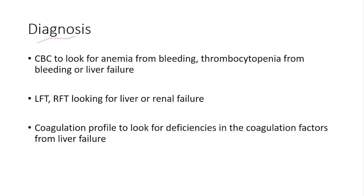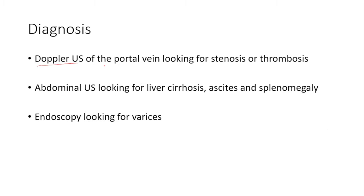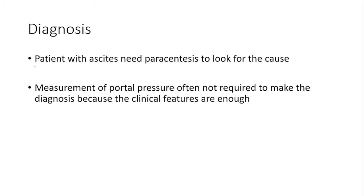For diagnosis, lab investigations include a CBC to look for anemia or thrombocytopenia from bleeding or liver failure, liver function tests and renal function tests to assess for organ failure, and a coagulation profile for deficiencies in coagulation factors. Doppler ultrasound of the portal vein looks for stenosis or thrombosis; abdominal ultrasound assesses for liver cirrhosis, ascites, and splenomegaly; and endoscopy looks for varices. Patients with ascites need paracentesis to determine the cause. Measurement of portal pressure is often not required as clinical features are usually sufficient.